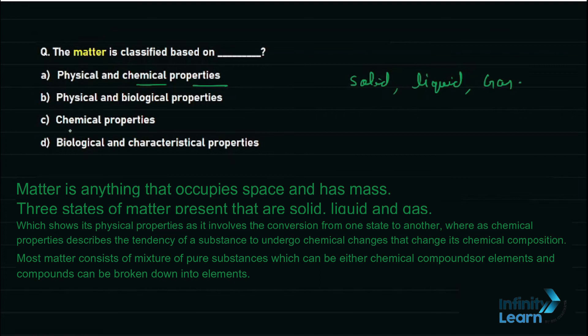The correct option out of these four will be option number first, A, that is physical and chemical properties. On the basis of physical properties, we normally use our three states of matter: solid, liquid, gas. And on the basis of chemical properties, we normally use element, compound, and mixture.